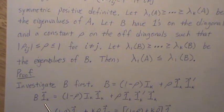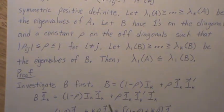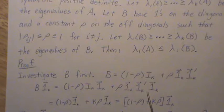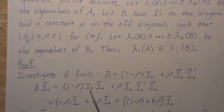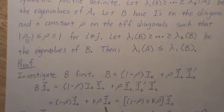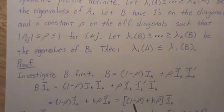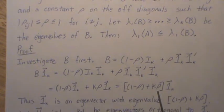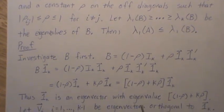If we multiply B by a column vector of 1s of k dimensions, we get (1-ρ)I_k times the 1 vector plus ρ times k times the 1 vector, which equals (1-ρ) + kρ times the 1 vector. So the column vector of 1s is an eigenvector for B with corresponding eigenvalue 1 - ρ + kρ. Thus the 1 vector is an eigenvector with eigenvalue [1 + ρ(k-1)].